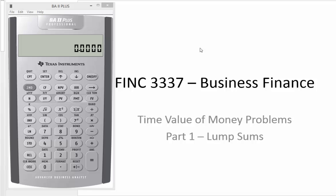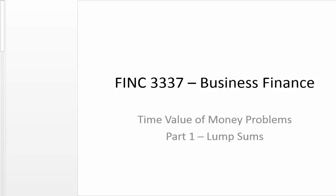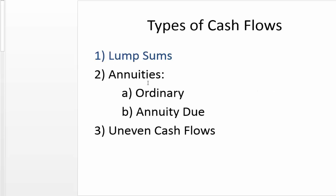We continue the lump sum problems and now we're going to go to the present value. Remember there are three basic types of cash flows: lump sums, annuities, and annuity cash flows. We're going to go now with the lump sum and finding the present value.